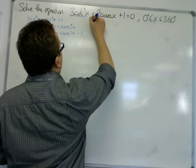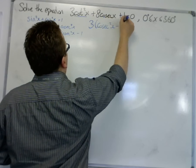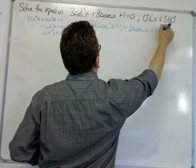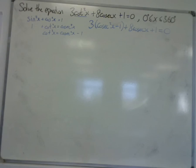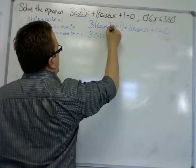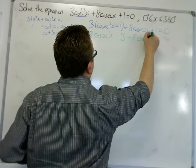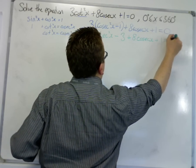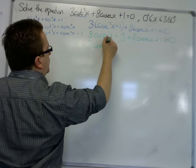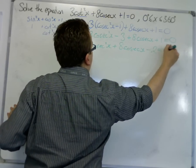We have 3 lots of (cosec²x - 1) + 8cosecx + 1 = 0. If I multiply out that bracket, we have 3cosec²x - 3 + 8cosecx + 1 = 0. So we have 3cosec²x + 8cosecx - 2 = 0. We now have a quadratic equation just in cosec.